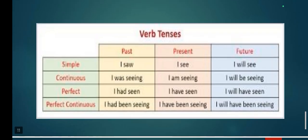Verb tenses with examples. Simple past: I saw. Simple present: I see. Simple future: I will see. Past continuous: I was seeing. Present continuous: I am seeing. Future continuous: I will be seeing. Past perfect: I had seen. Present perfect: I have seen. Future perfect: I will have seen.